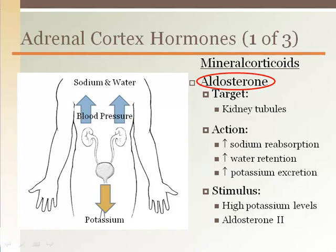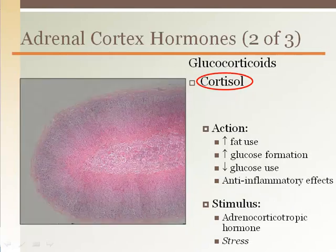Mineralocorticoid release is stimulated by high extracellular potassium levels and a powerful blood pressure hormone called angiotensin 2. The zona fasciculata releases a family of hormones called glucocorticoids. The most common is hydrocortisone, better known as cortisol.